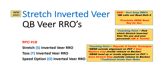Hi, Paul Hefty here with the Triangle O Football System. I want to go over a new stretch inverted veer concept where we have the quarterback doing veer run-run options. What we're going to do here is read the frontside defensive end for all of these.